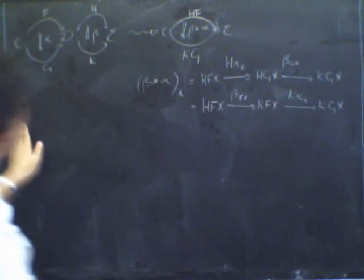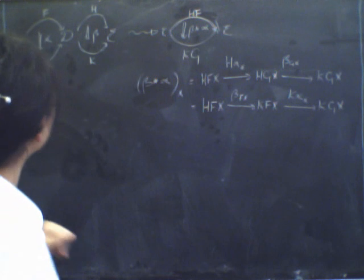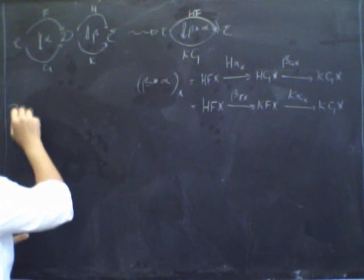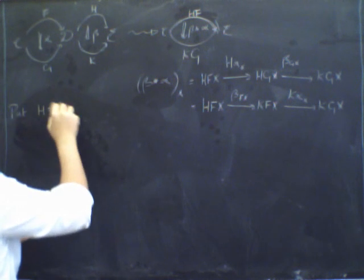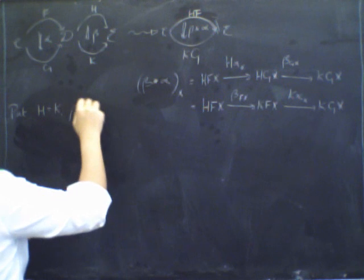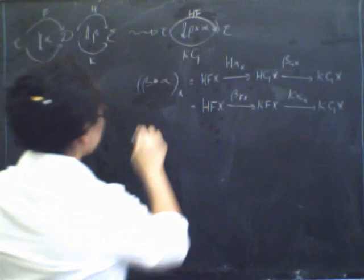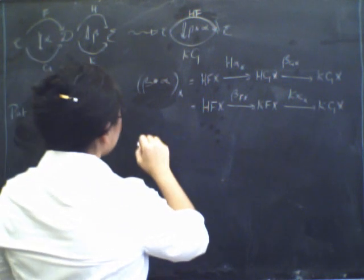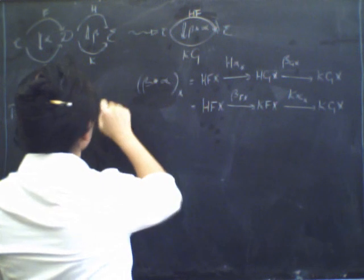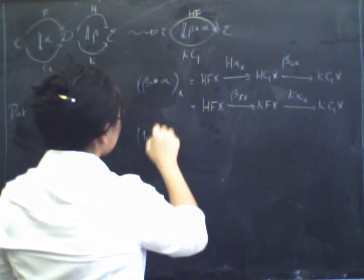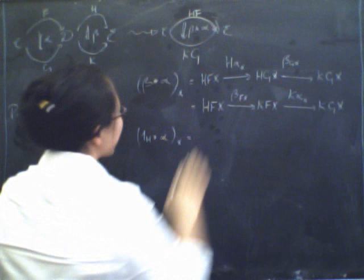Let's try a little experiment. What happens if one of these things is the identity? Let's try putting beta to be the identity. So H equals K, and let's put beta to be the identity on K. Then what happens to this formula? We get beta is the identity on H, so that's the identity on H star alpha, at its component of X.